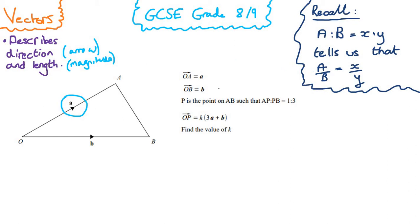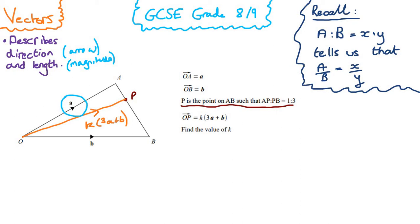Let's get on with this question. We're told the vector O to A is 'a', O to B is 'b'. P is the point on AB such that the ratio AP to PB is 1 to 3. We're also told that O to P equals k(3a + b), and our goal is to find the value of k, where k is just a constant.